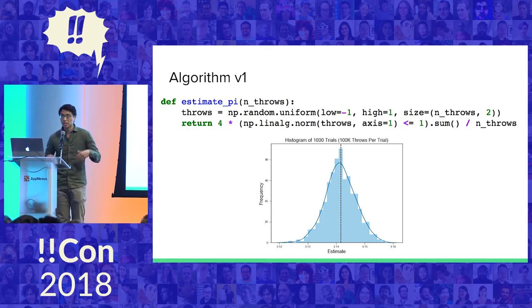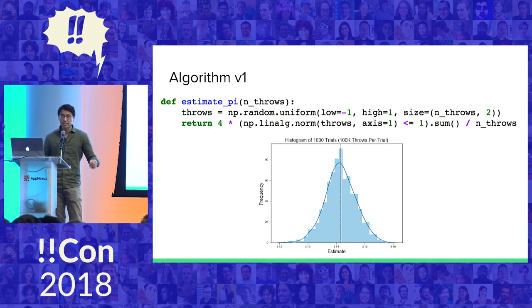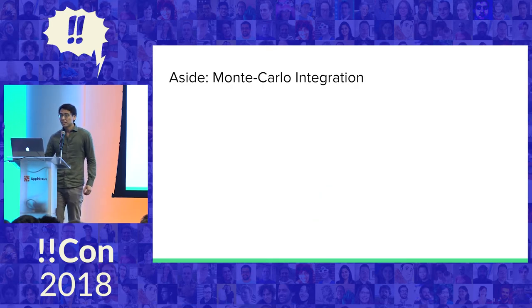If you see this bell-shaped curve and you're thinking that looks kind of like a Gaussian distribution, that's not a coincidence. That's the central limit theorem at play.